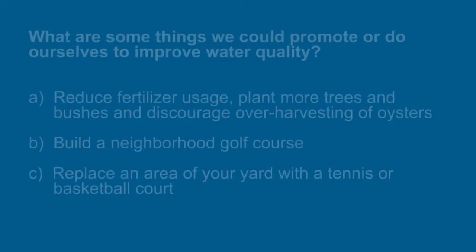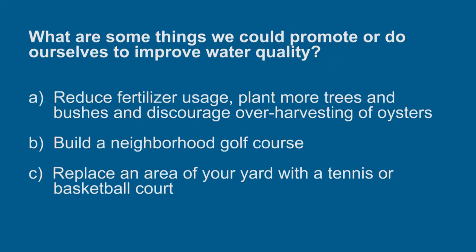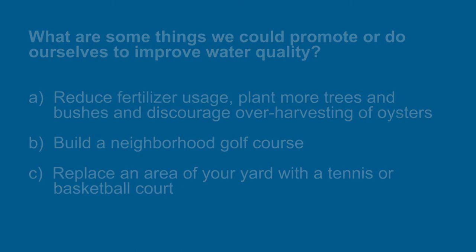So how do we stop or reverse this process? What are some things we can promote or do ourselves to help improve water quality? We can reduce our fertilizer usage, plant trees or bushes along riverbanks to help filter and slow the runoff from entering into the streams, or even discourage over-harvesting of our natural filtering organisms such as oysters.